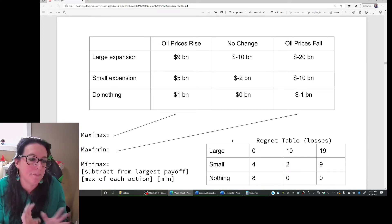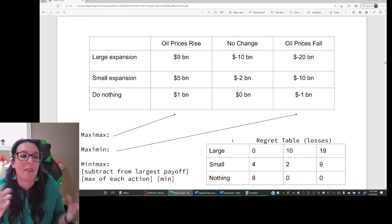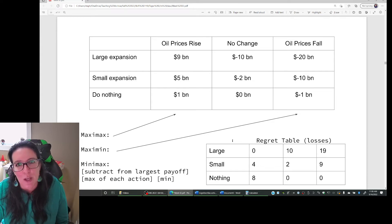All right, you are Shell. You are trying to make decisions about expansion, large expansion for your business, small expansion in terms of production of oil, or you could do nothing. At the same time, we have market prices for oil changing. They could go up. They could have no change. They could fall. So the MaxiMax approach for decision making when you have this uncertainty is to look at the best possible scenario. So the best possible scenario for us is that oil prices will go up.